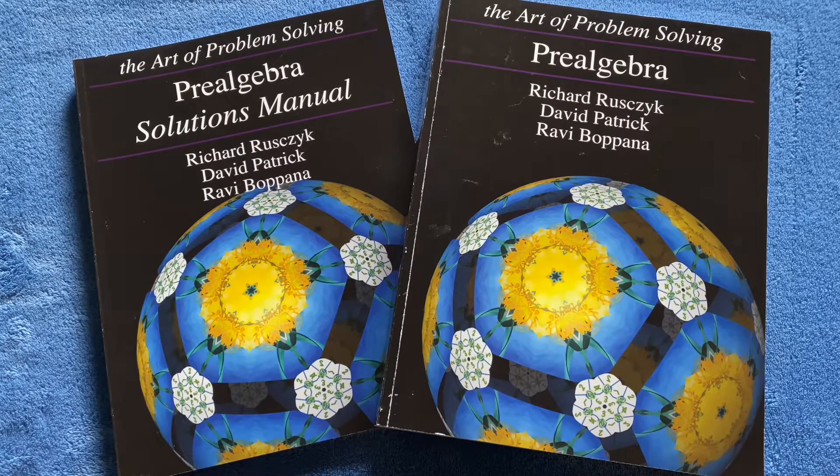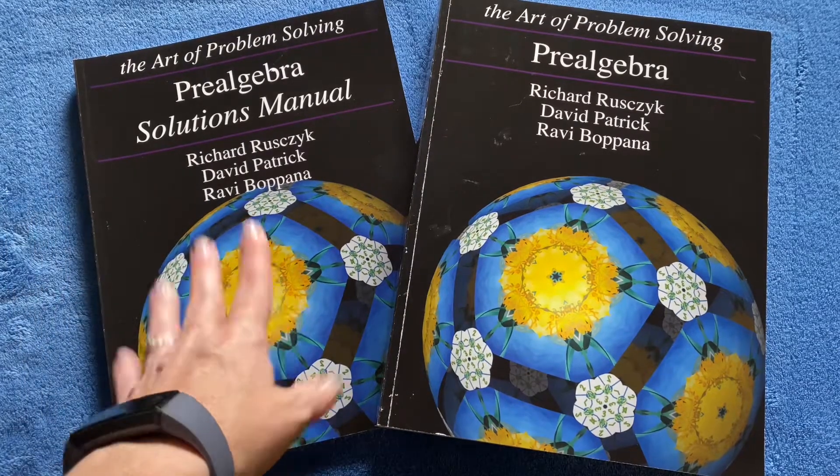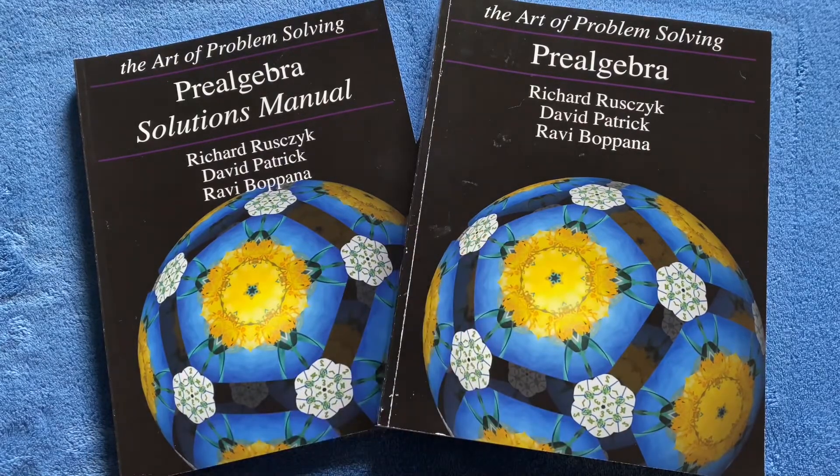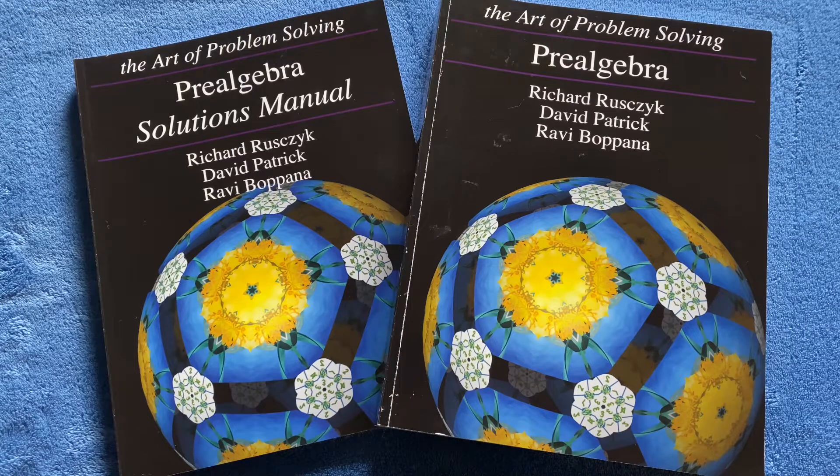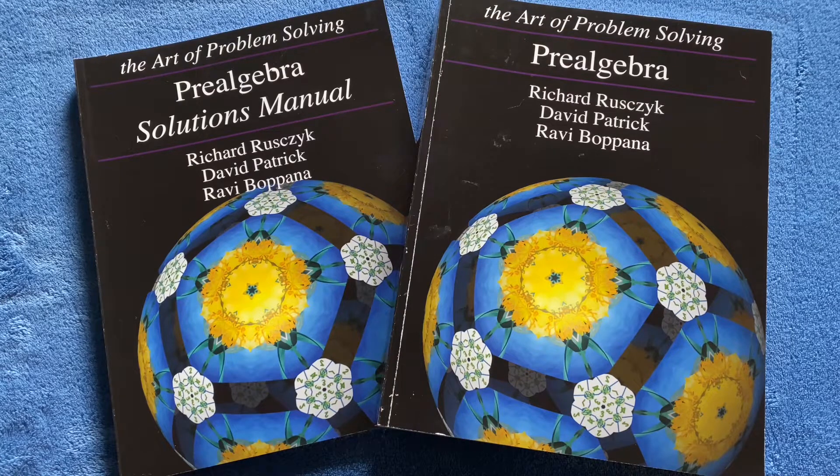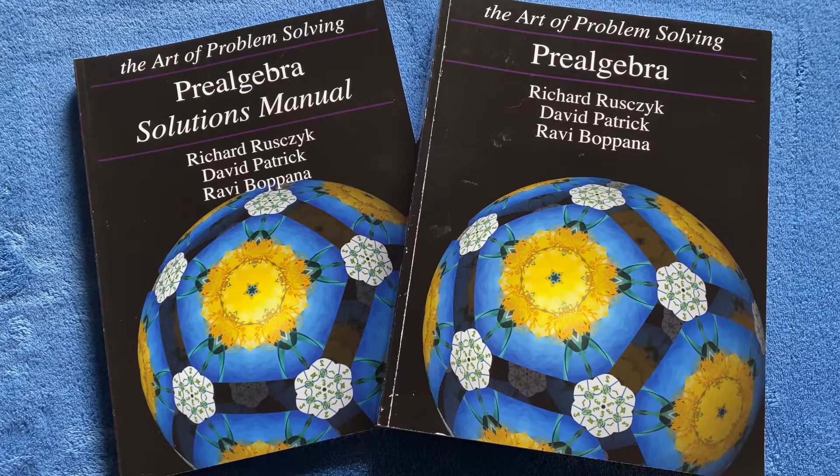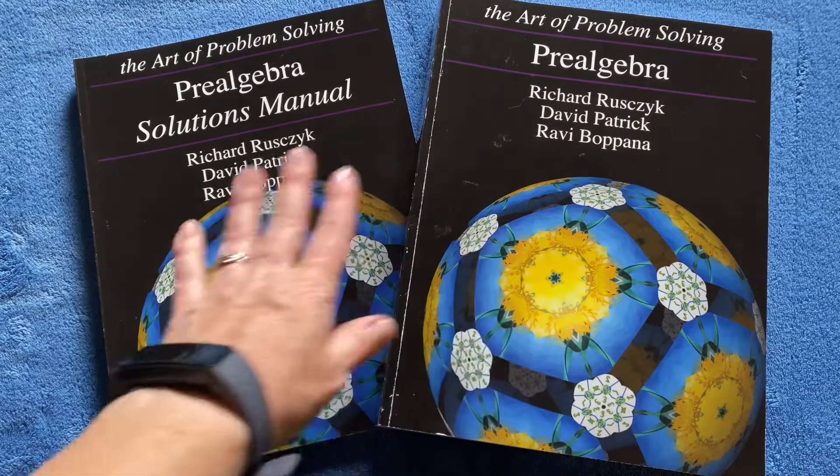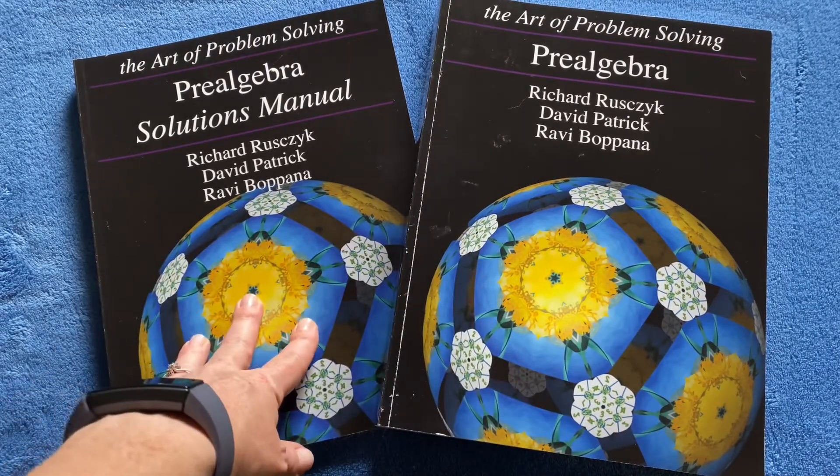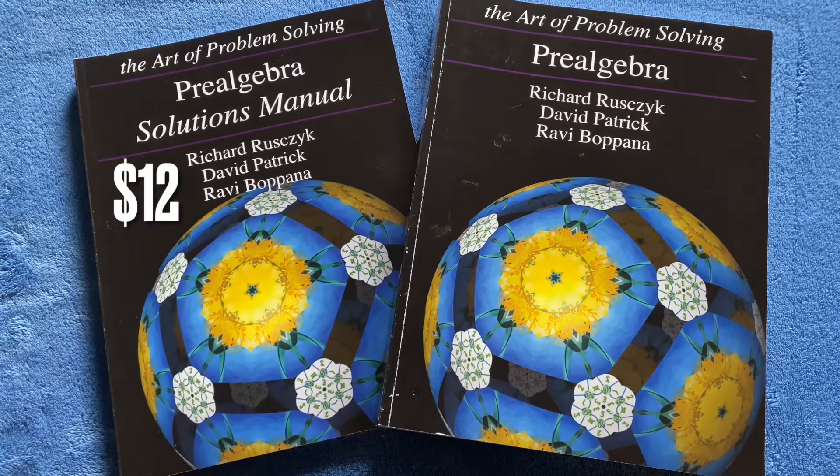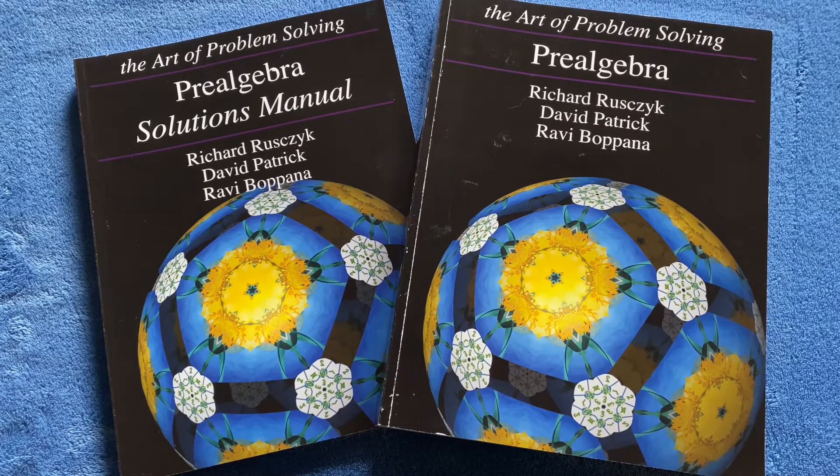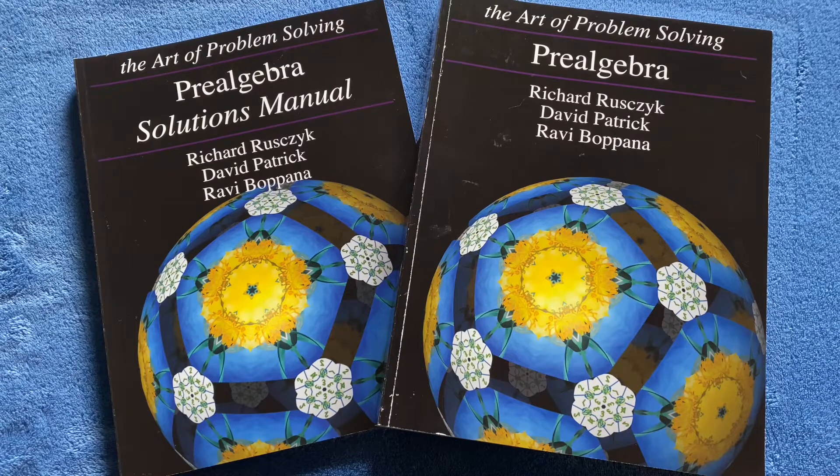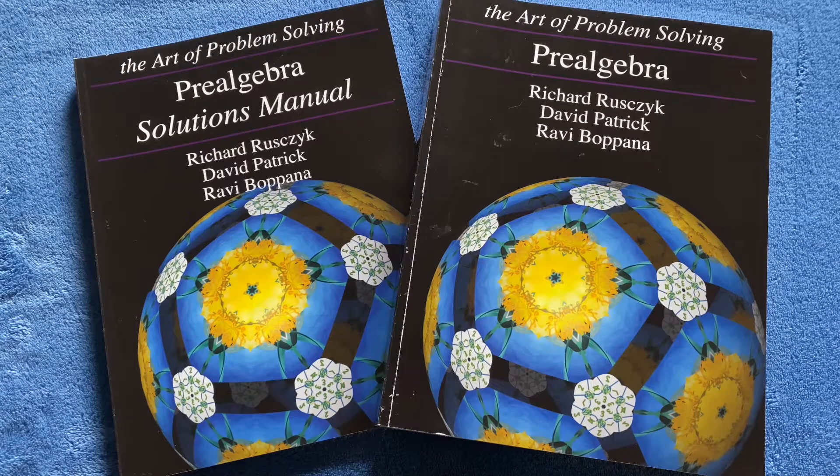All right, here we have the Art of Problem Solving. We have the solutions manual and the textbook itself. You can get both of these books on Amazon. I actually purchased them through the Art of Problem Solving website, but if you go to Amazon, this book is available for $53 as your list price and this book is available for $12. So together, you're not looking at spending a whole lot of money for a whole year's worth of curriculum. I would definitely categorize this one as affordable.